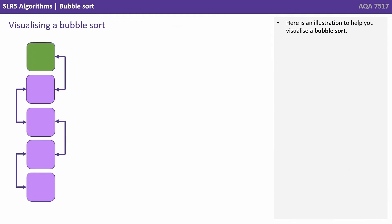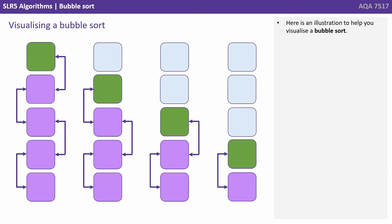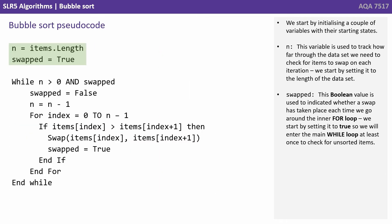Here is an illustration to help you visualise a bubble sort. We start by initialising a couple of variables with their starting states. N — this variable is used to track how far through the data set we need to check for items to swap on each iteration. We start by setting it to the length of the data set. And swapped — this boolean value is used to indicate whether a swap has taken place each time we go round the inner for loop. We start by setting it to true so we will enter the main while loop at least once to check for unsorted items.